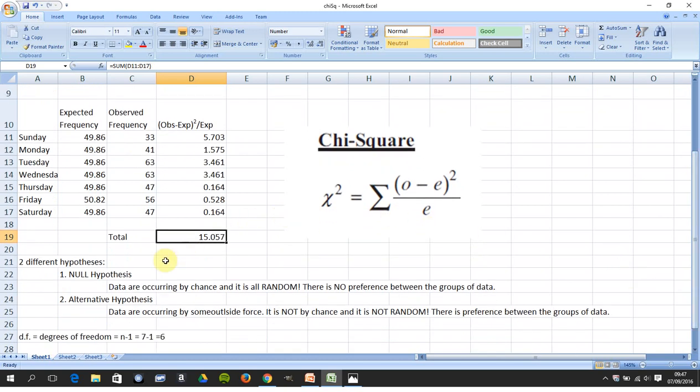What's the null hypothesis for your chi-square test for randomness? The data occurs by chance, so there's no preference, there's no bias, there's no inclination, so everything is completely at random. And the alternative hypothesis is that there's some outside force, some outside agency is acting and the thing is not by chance.